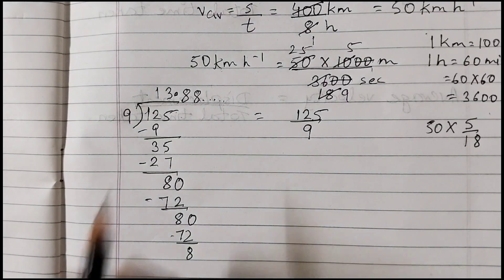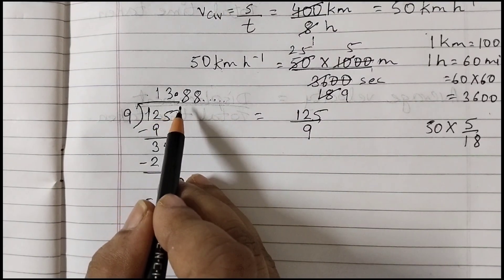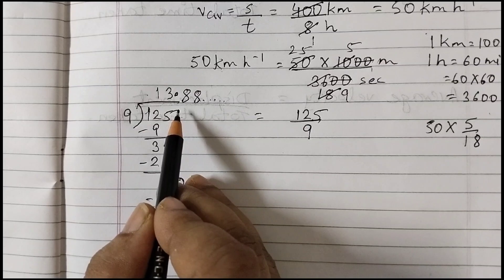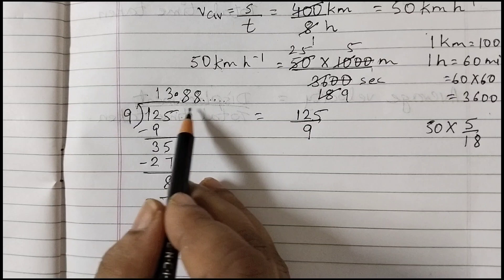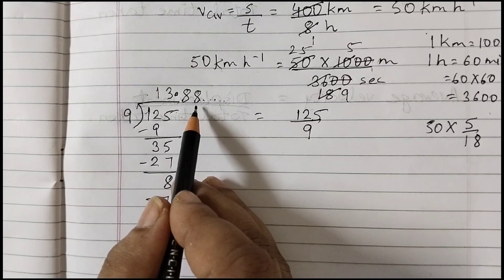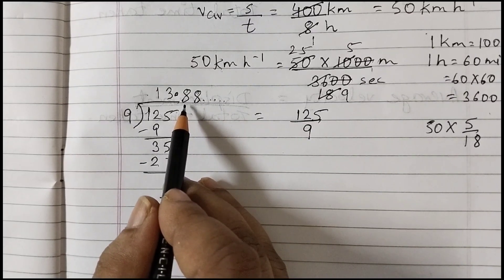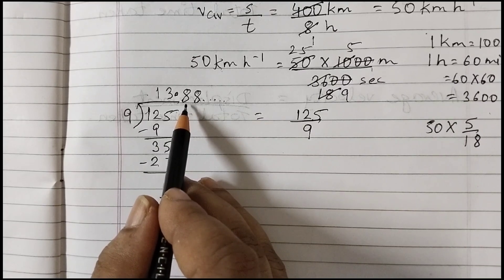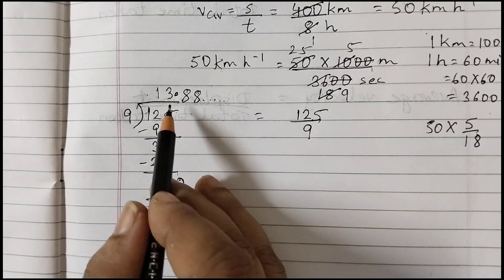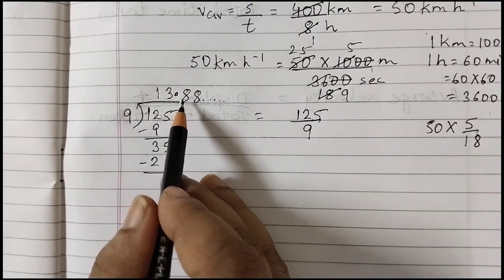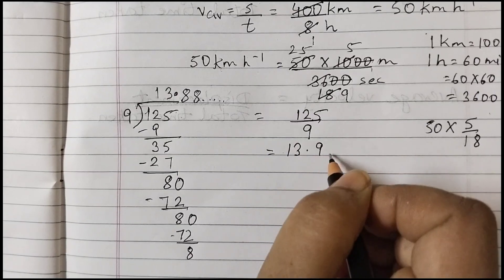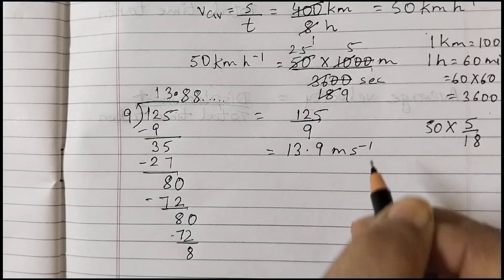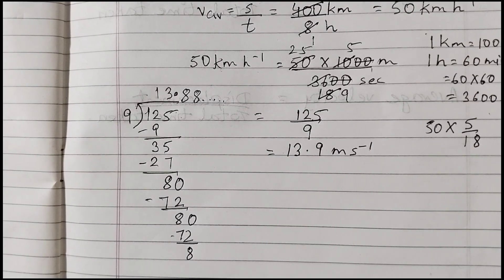Many students say the answer is 13.8 — but that is not correct. When rounding to the tenths place, look at the next digit: it is 8, which is 5 or more, so we round up. 13.888... rounded to one decimal place becomes 13.9. So the answer is 13.9 meters per second.